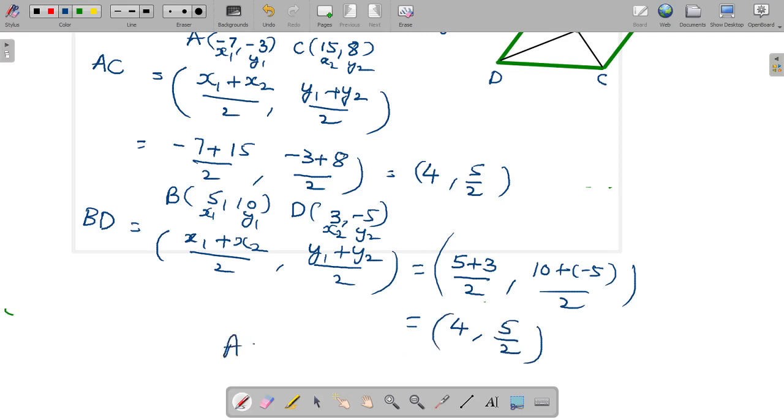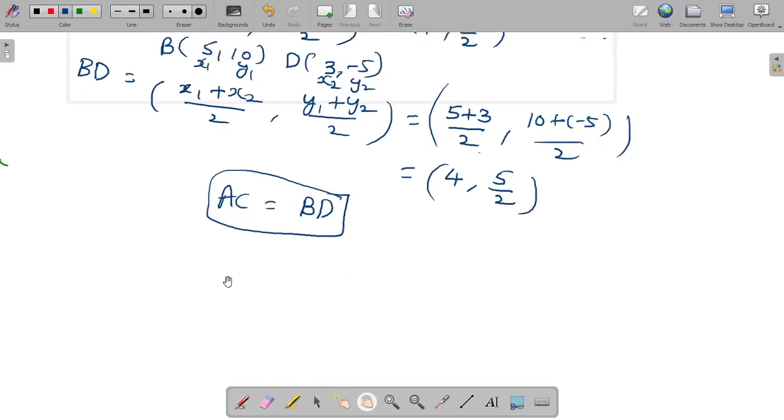Therefore, AC diagonal midpoint is equal to BD diagonal midpoint. They are the same. Therefore, it is a parallelogram.